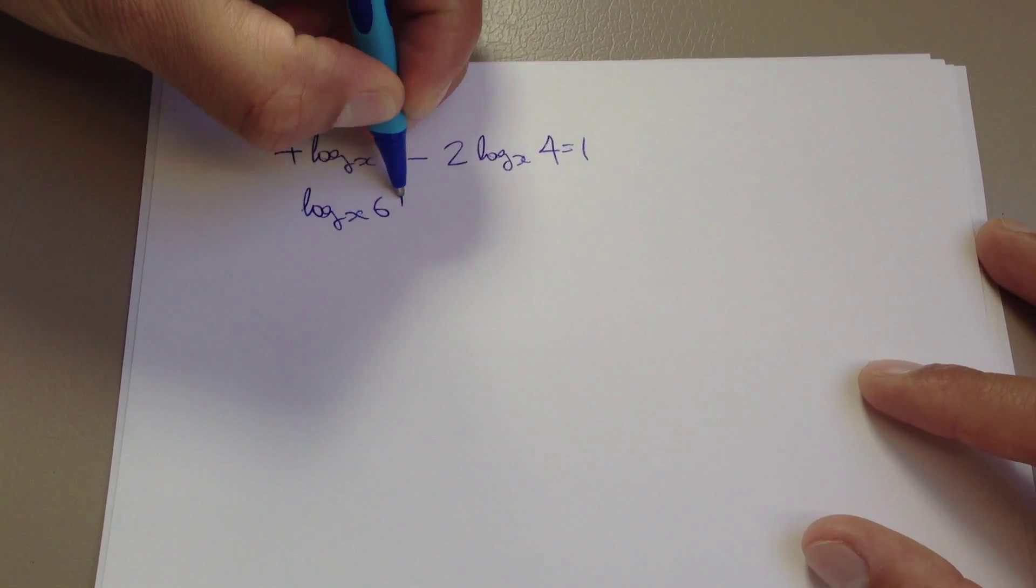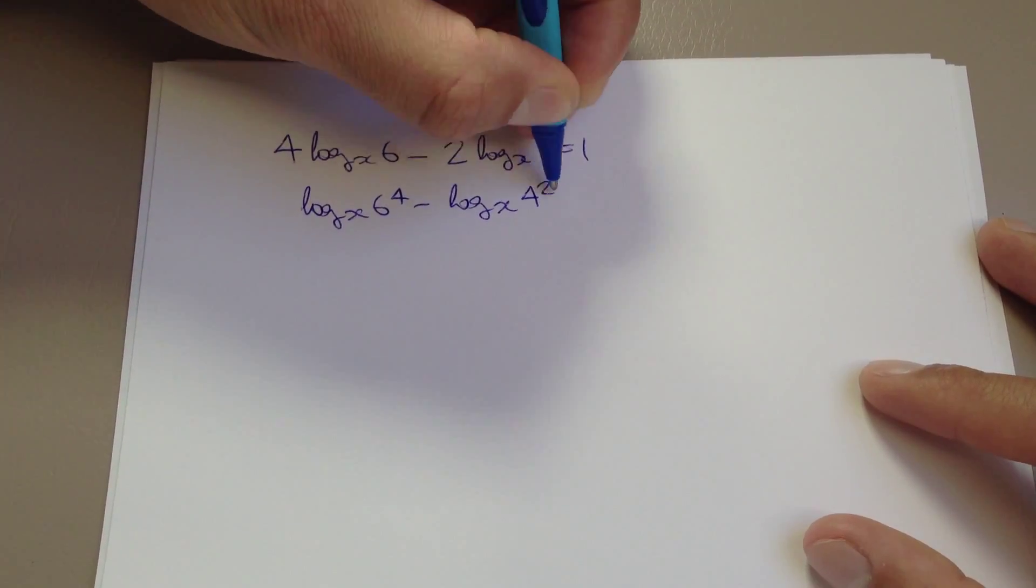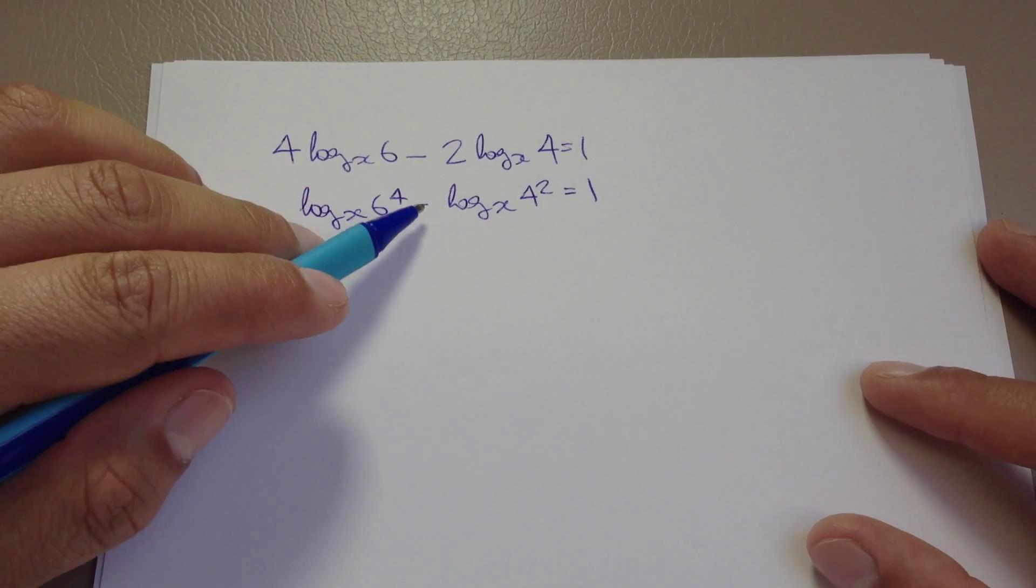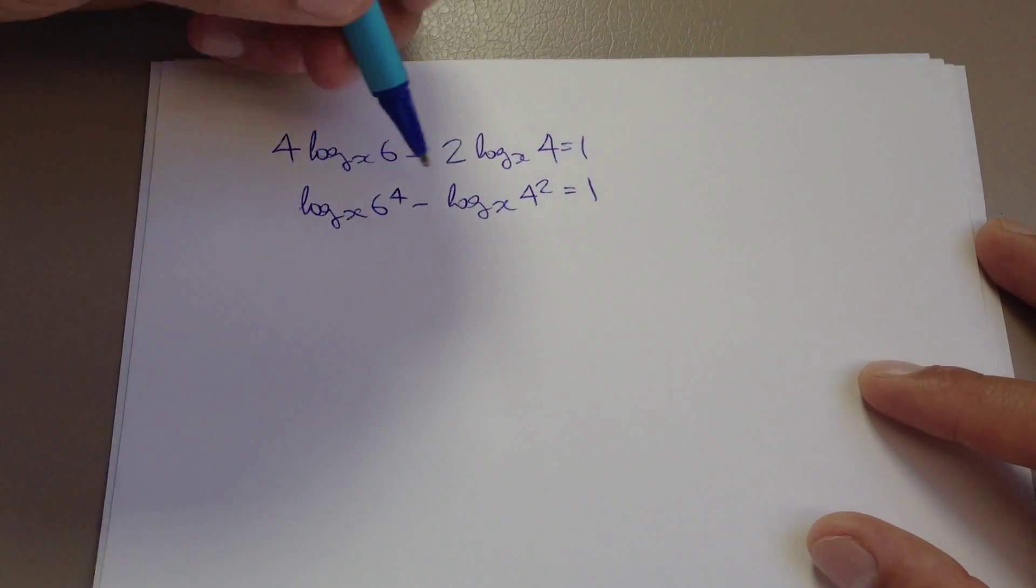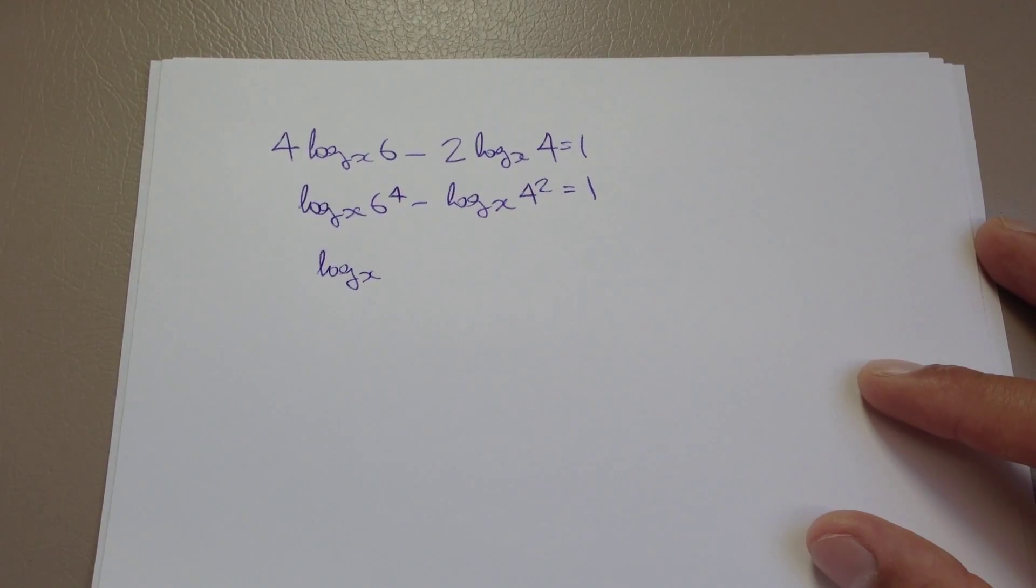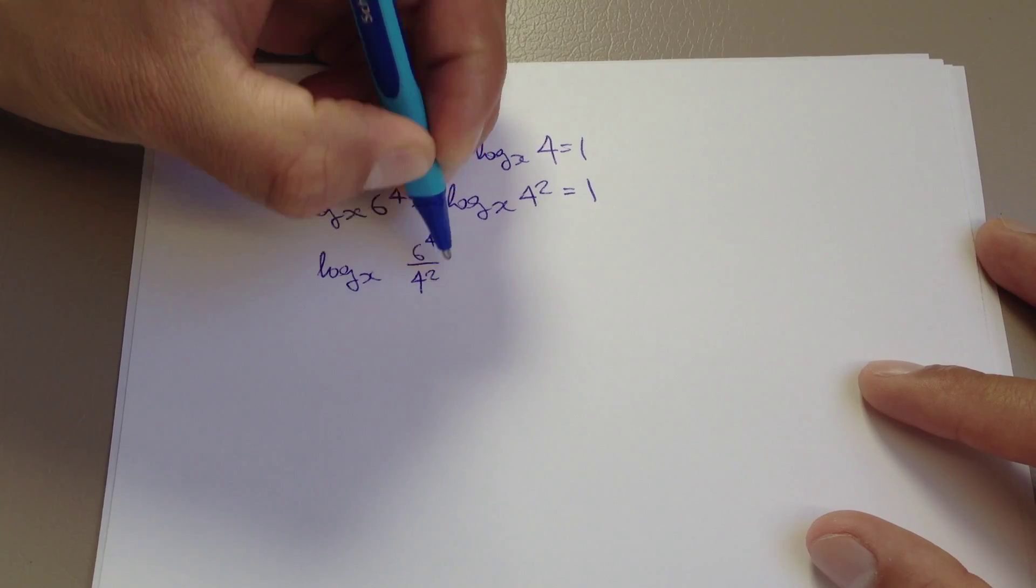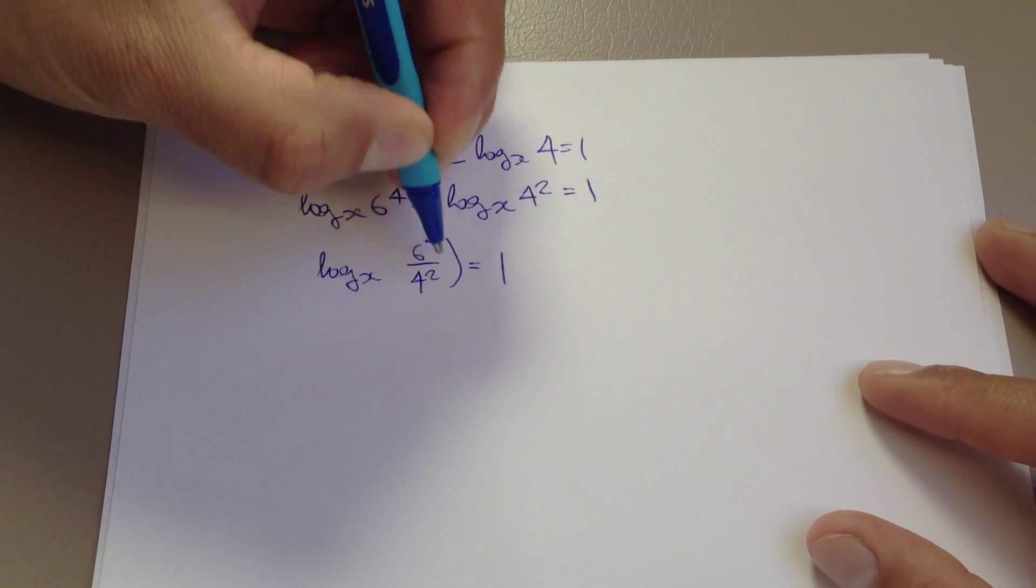So log to the base x of 6 to the 4 take away log to the base x of 4 squared equals 1. Because I have a subtraction, I can use one of my earlier rules and rewrite that as log to the base x of 6 to the power of 4 over 4 squared, and that equals 1.